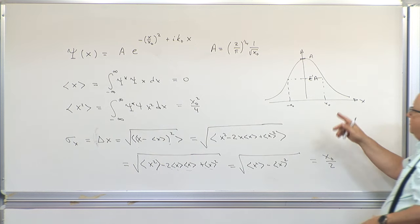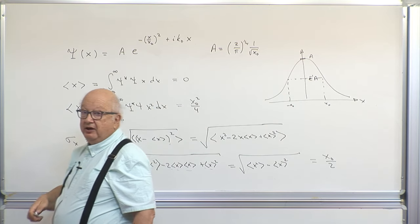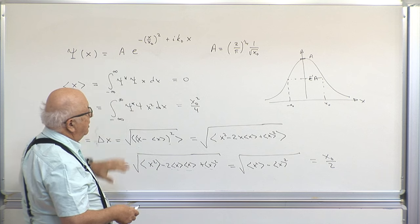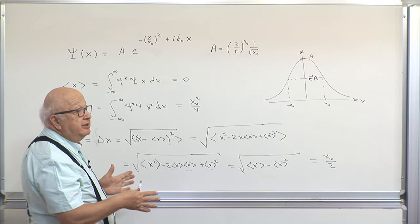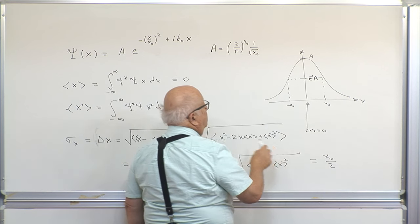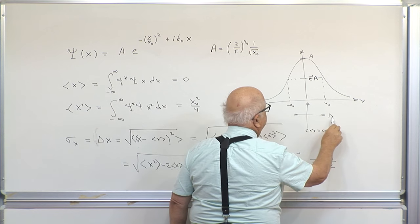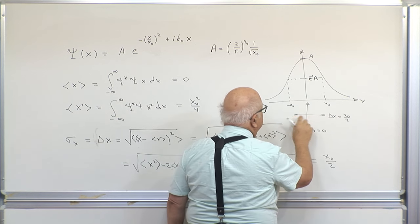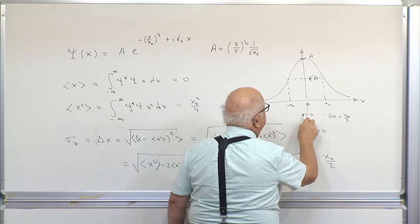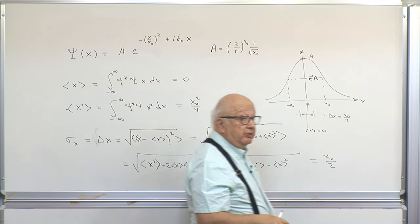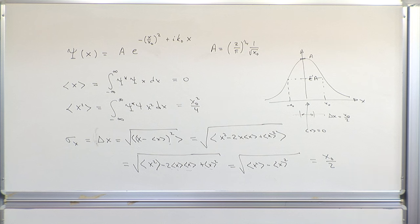If the probability density function is described by the magnitude squared of this Gaussian, the uncertainty in x — with the average value at x equals zero — turns out to be delta x equals x0 over 2, not the full width x0. So that gives us the fluctuation as measured by this equation, telling us how wide this Gaussian is.